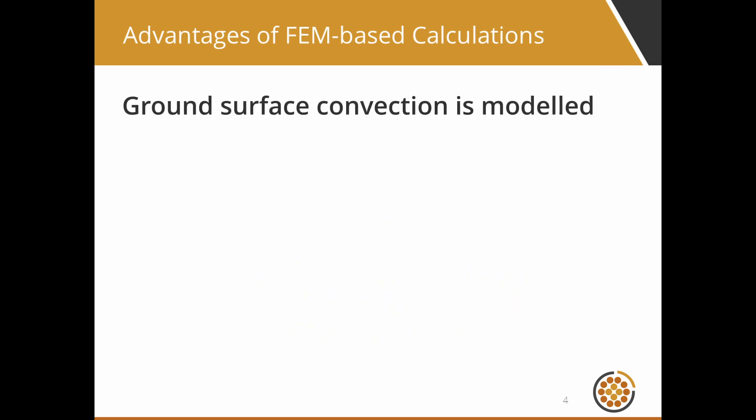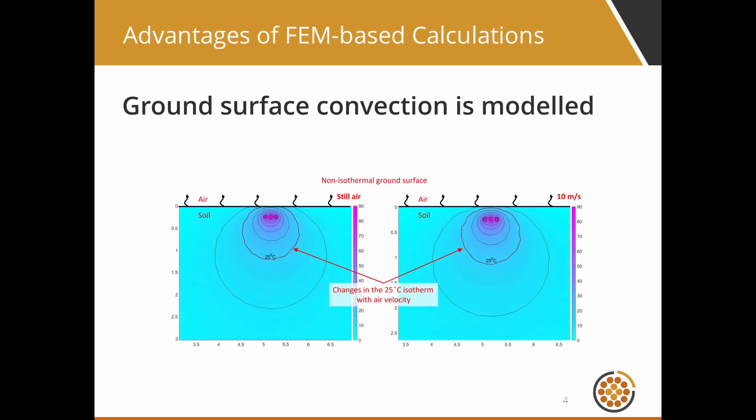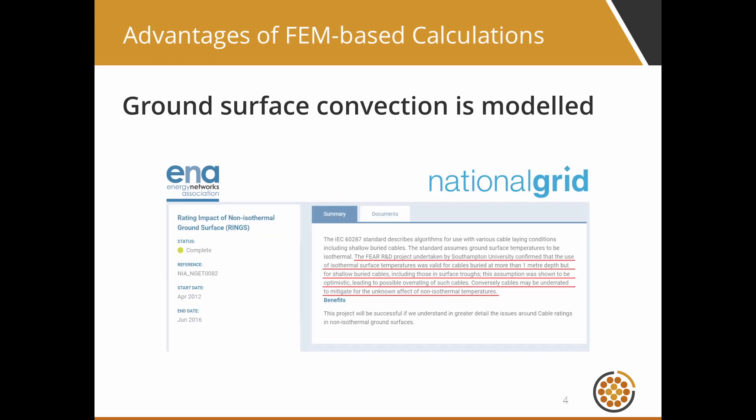Secondly, the heat transfer between the ground and air is modelled. The IEC standard assumes that no heat is transferred between the ground surface and the air above, known as the isothermal assumption. FEM, on the other hand, allows the convection of heat generated by buried cables — which flows into the ambient air — to be considered. For shallow buried cables, the difference in current ratings between the IEC standard and FEM is often significant.